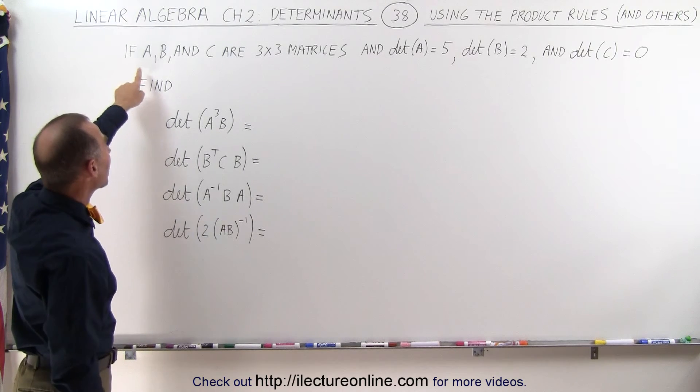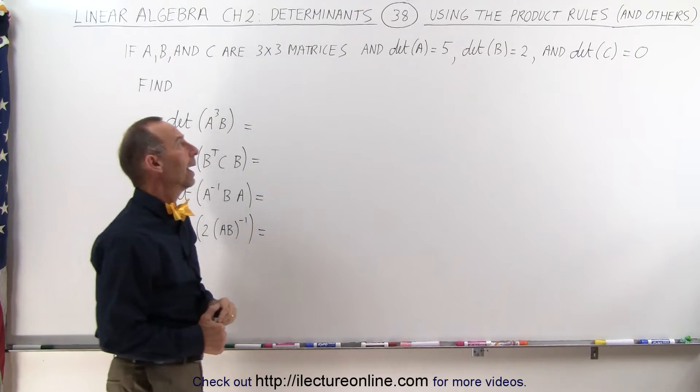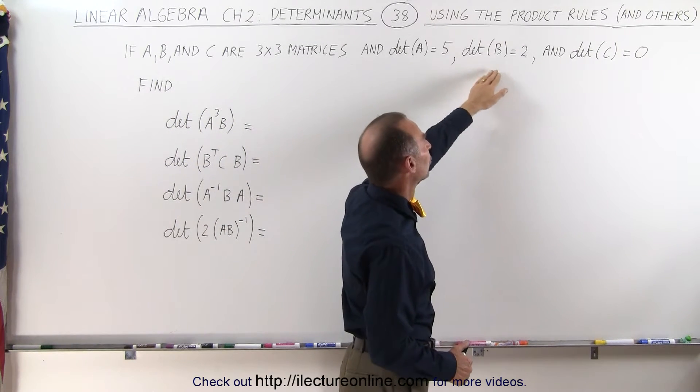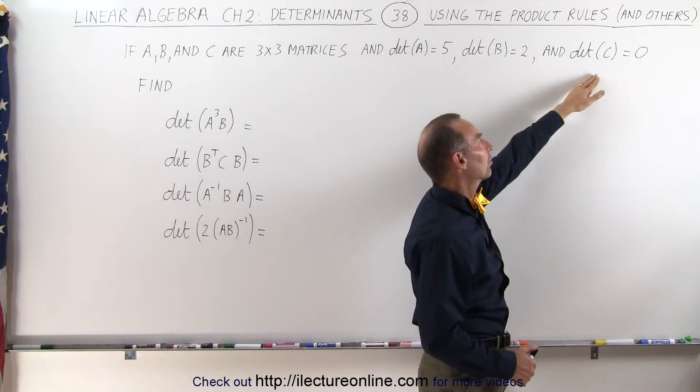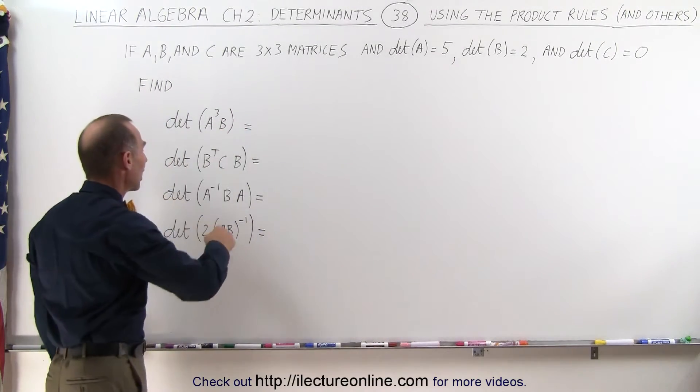Let's say that we have three matrices A, B, and C, and all three of them are 3 by 3 matrices, and the determinant of matrix A is 5, the determinant of matrix B is 2, and the determinant of matrix C is 0. Can we solve for these four items right here?